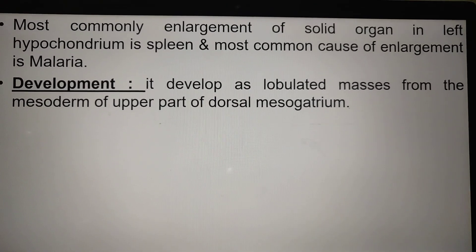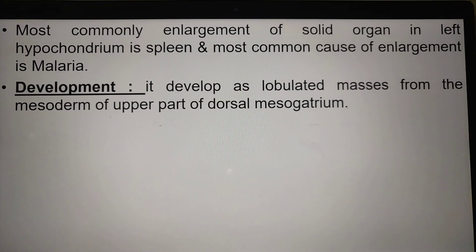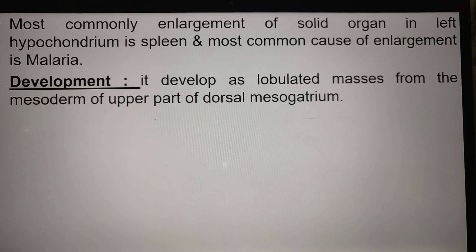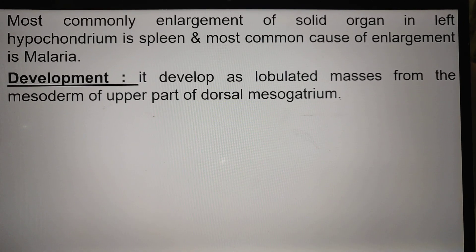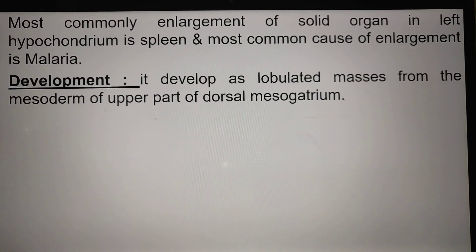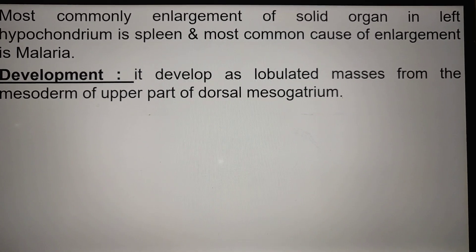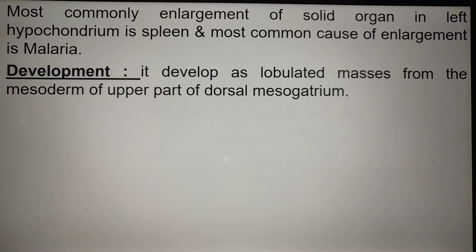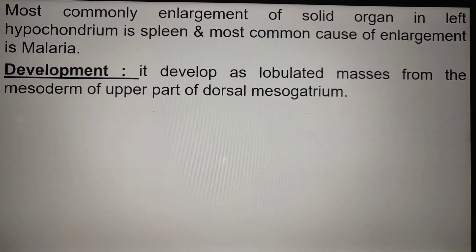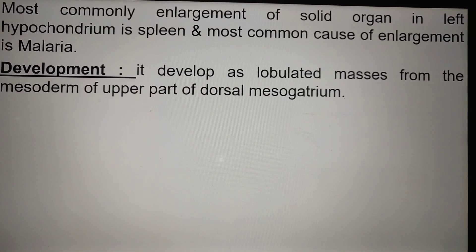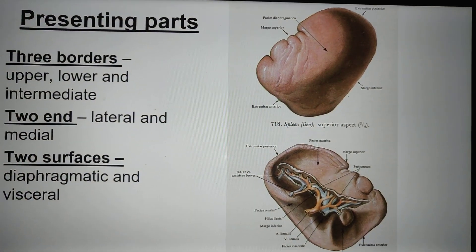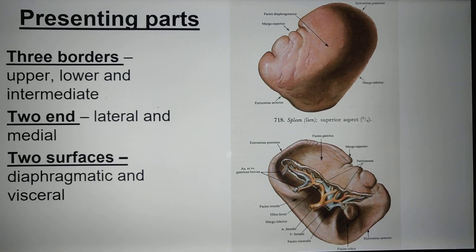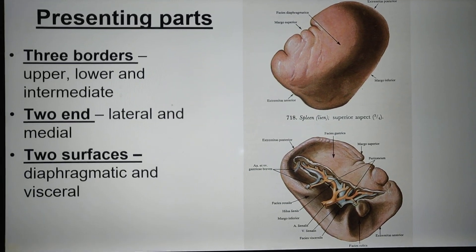The spleen is developed from a lobulated mass from the mesoderm of the upper part of the dorsal mesogastrium. It is developed from the dorsal mesogastrium in the upper part of the mesoderm.